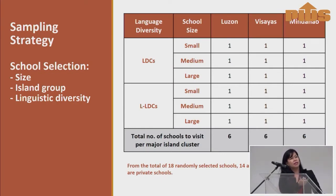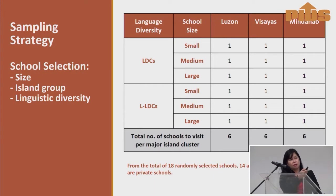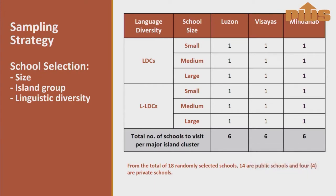Here's our sampling strategy. We selected one small, one medium, and one large school from each of Luzon, Visayas, and Mindanao for linguistically diverse contexts, and the same for LLDCs, for a total of 18 schools. Of course, 18 schools out of over 51,000 is minuscule, but we managed to support it with a survey.